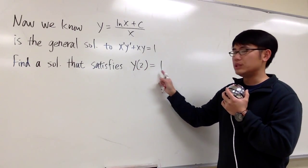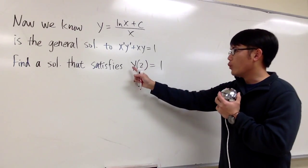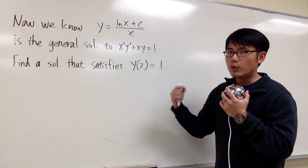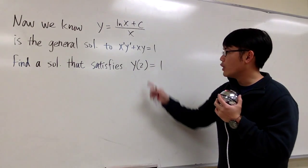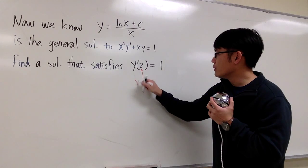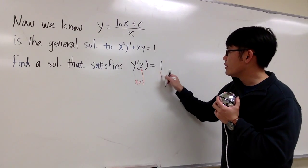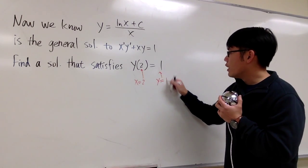Which we have y of 2 is equal to 1. And remember, when they write it down this way, it means that since y is a function of x, we have x is being 2, and if x is equal to 2, then we are going to get y is equal to 1.